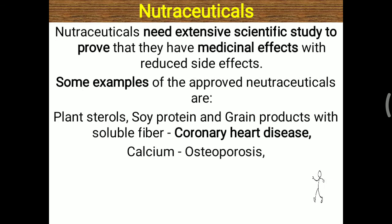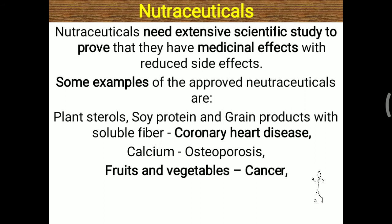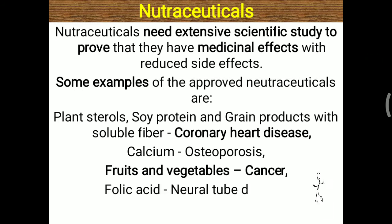Calcium is mostly given in older age to prevent osteoporosis. Fruits and vegetables are also utilized for the treatment and prevention of cancer, along with some other cancer drugs. Folic acid is worldwide accepted to prevent neural tube defects and is given to each and every pregnant woman. These are all the best examples of nutraceuticals.